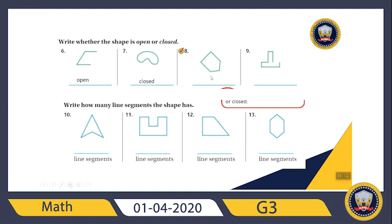How about this pentagon? Of course it is a closed shape. How about this one — is it closed or open? It starts from here, continues, and finishes here, but it's not linking back to the start point, so it is an open shape.